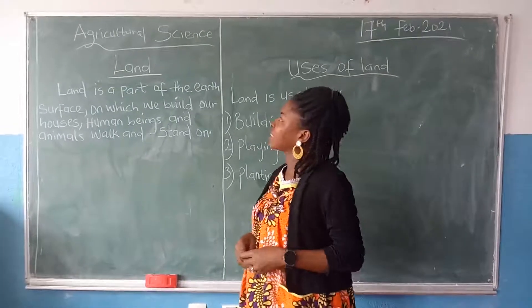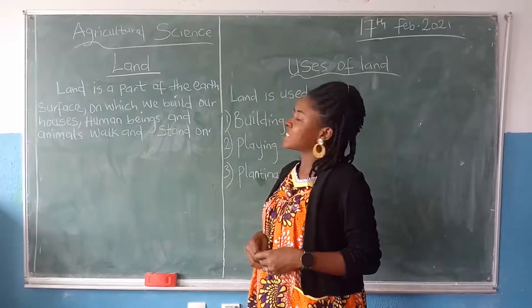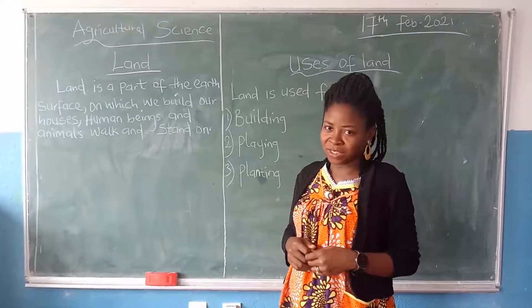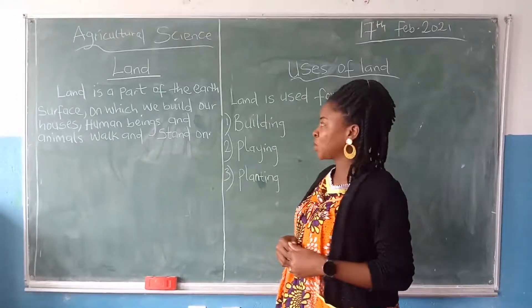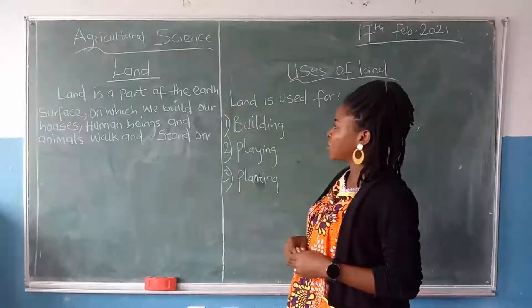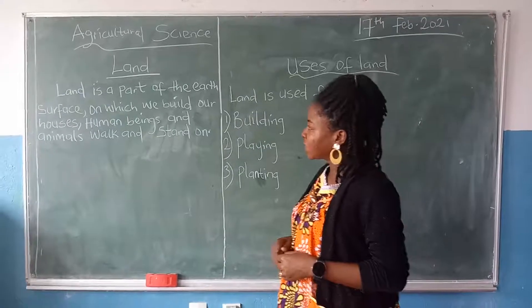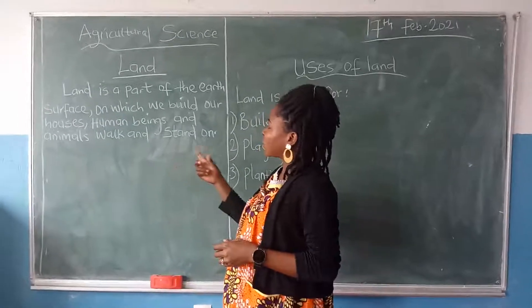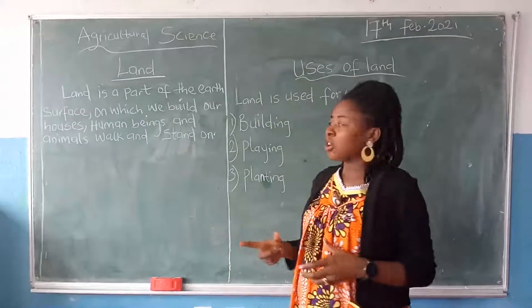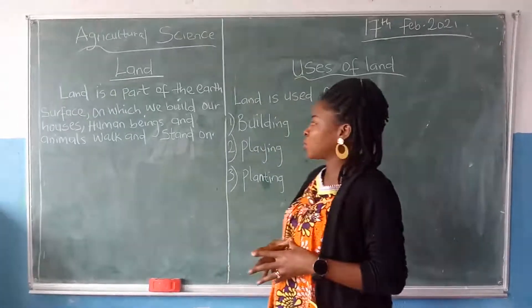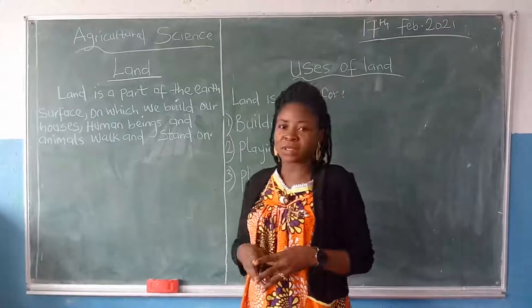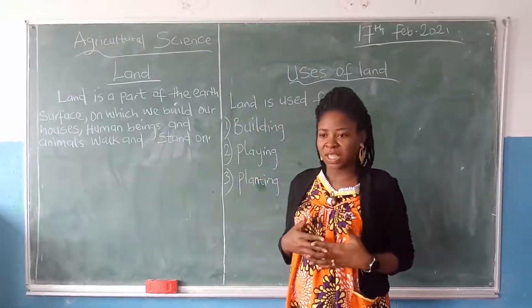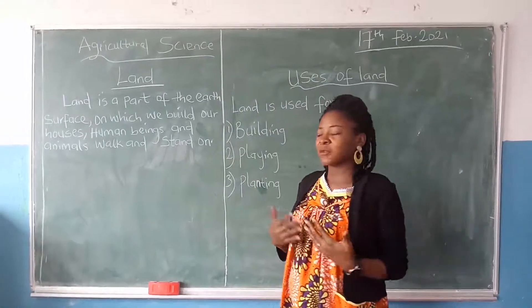Today we are going to be looking at land. This is agricultural science for those in primary. We are going to be looking into the topic, land. We say that land is a part of the earth's surface on which we build our houses.